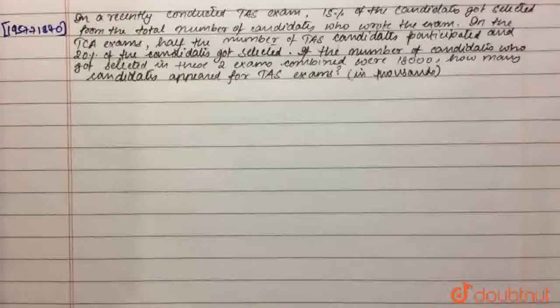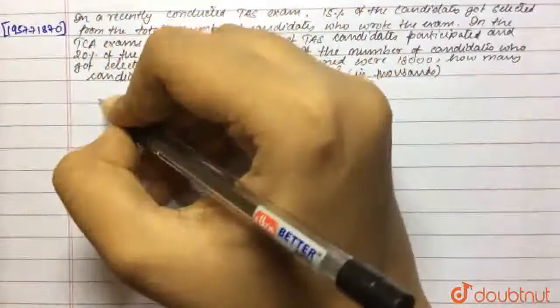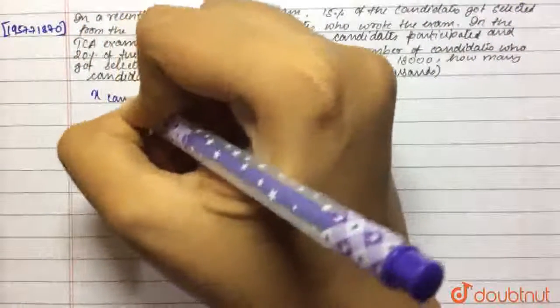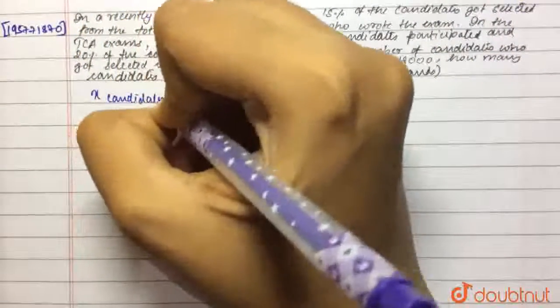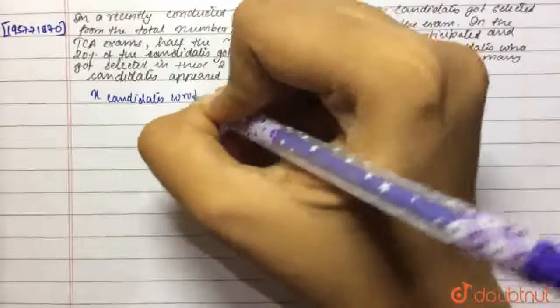The question states, in a recently conducted TAS exam, 15% of the candidates got selected from the total number of candidates who wrote the exam. So, let's assume X number of people wrote the exam. X candidates wrote the exam.